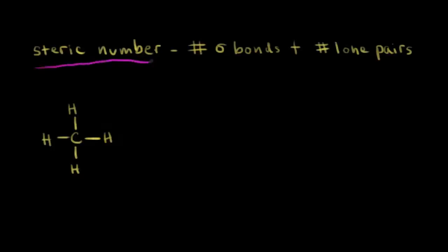The concept of steric number is very useful because it tells us the number of hybridized orbitals that we have. To find the steric number, you add up the number of sigma bonds, or single bonds, and to that you add the number of lone pairs of electrons.